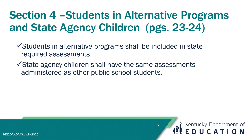Section 4 of the Inclusion of Special Populations Regulation focuses on students who receive services through an alternative program, and also covers requirements for state agency children. This information can be found on pages 23 through 24 of the regulation document. All students enrolled in a Kentucky public school are expected to test unless they apply for and receive a medical non-participation. This also applies to students in alternative programs or settings. Alternative programs are considered non-A1 or non-accountable programs. The Kentucky School for the Deaf and Kentucky School for the Blind are examples of such programs. State agency children — students ordered or placed by the courts — are also expected to complete all state assessments unless an approved non-participation applies.